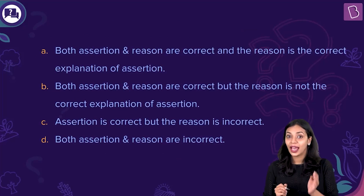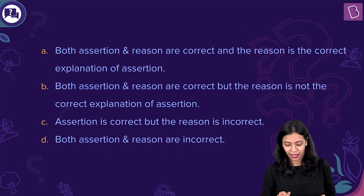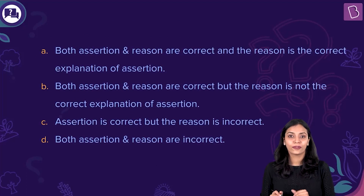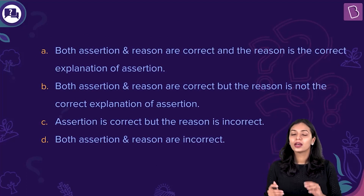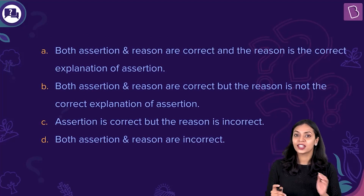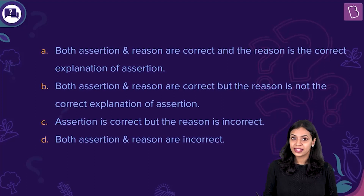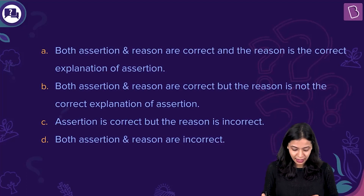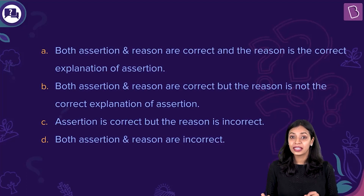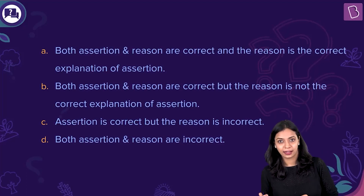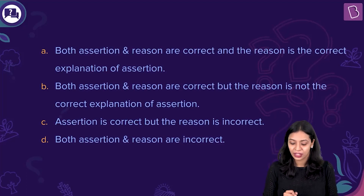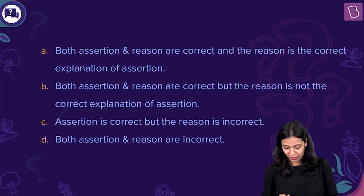Select the correct option. Option A: Both assertion and reason are correct and reason is the correct explanation of assertion. Option B: Both assertion and reason are correct but reason is not the correct explanation of assertion. Option C: Assertion is correct but the reason is incorrect. Option D: Both assertion and reason are incorrect.